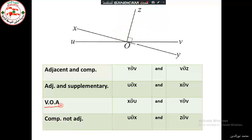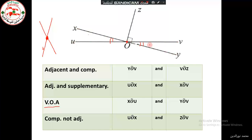Third case: we are looking for vertically opposite angles. Memorize that vertically opposite angles have a common vertex, and the sides of one are the prolongation of the sides of the other. Here, O is the vertex, XO is the prolongation of YO, and UO is the prolongation of VO. So these two angles are vertically opposite: UOX and VOY.